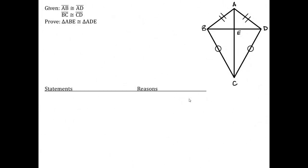Again, we are given that segment AB is congruent to segment AD and that segment BC is congruent to segment CD, and we have to prove that triangle ABE is congruent to triangle ADE. So first things first, state your givens. Easy enough, you guys are used to that by now.